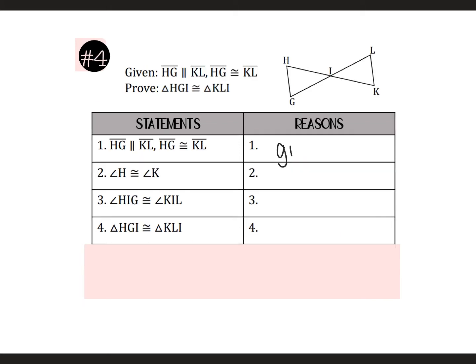For number four, the first reason is given. HG and KL are parallel, so we give those arrows going the same direction. We also have HG congruent to KL, so we can mark tick marks on them. Remember, whenever you have parallel lines, you're going to have some kind of angle pair. So they tell you that H and K are congruent. You can try highlighting the two parallels and a transversal to see it — you can always draw out your lines and those are alternate interior angles.